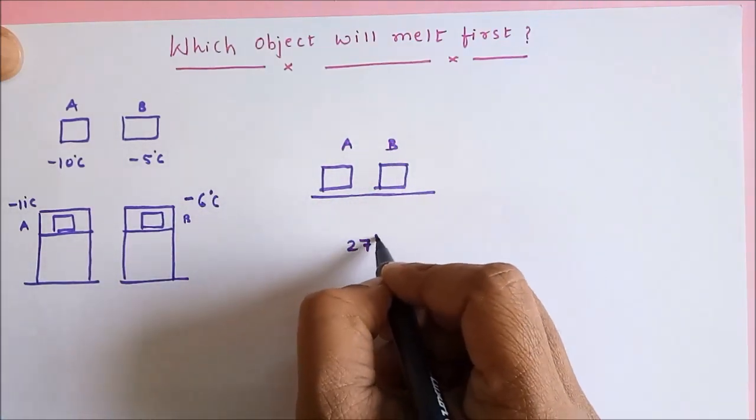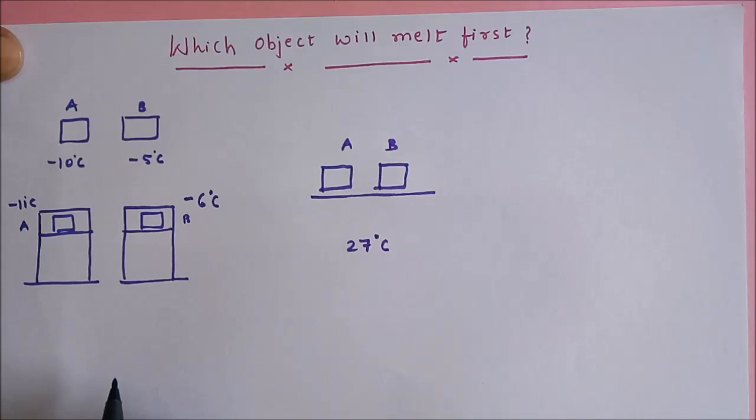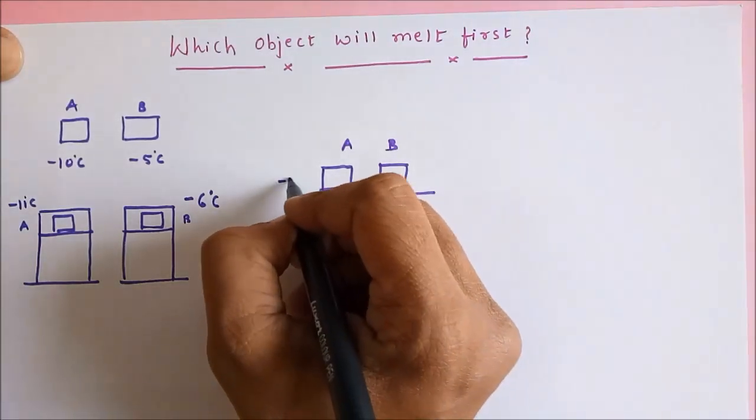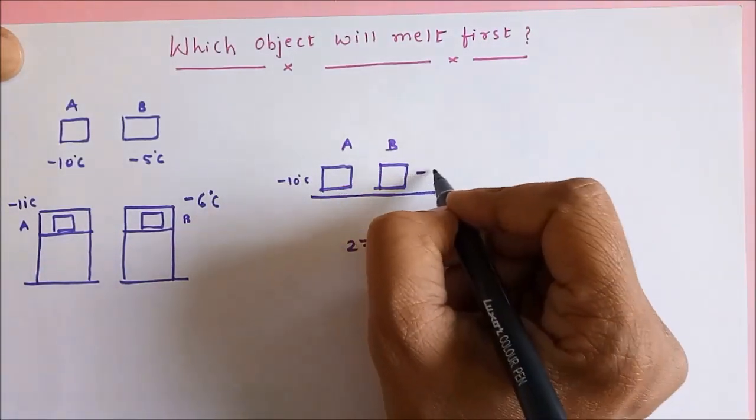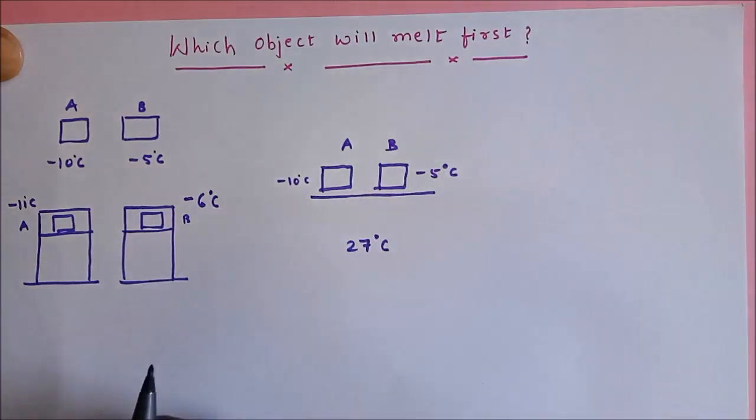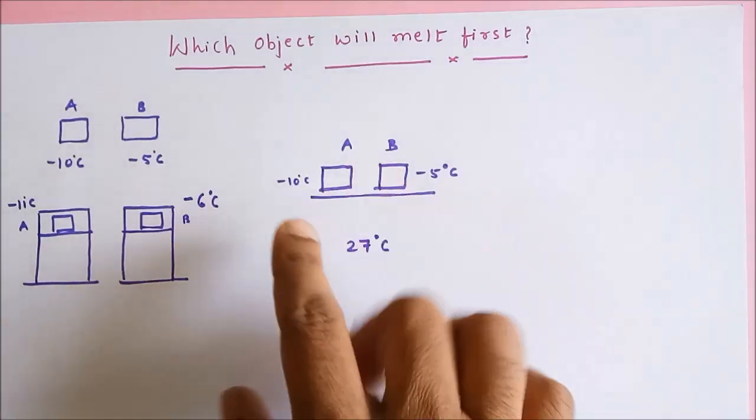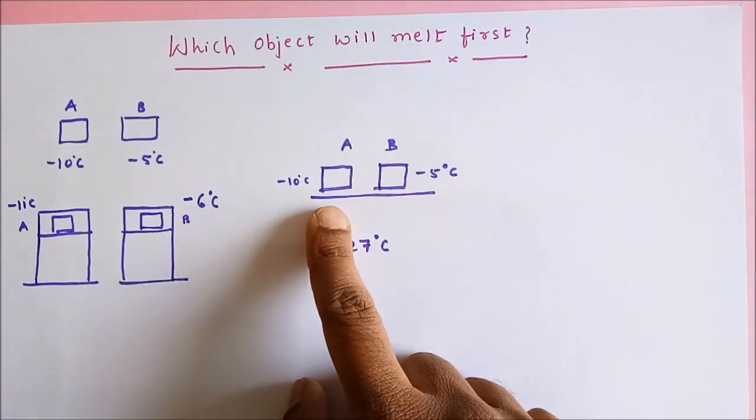The temperature is 27 degree Celsius. So A's melting point is minus 10 degree Celsius, B's melting point is minus 5 degree Celsius. Which object is going to melt first? I felt this problem to be quite difficult.